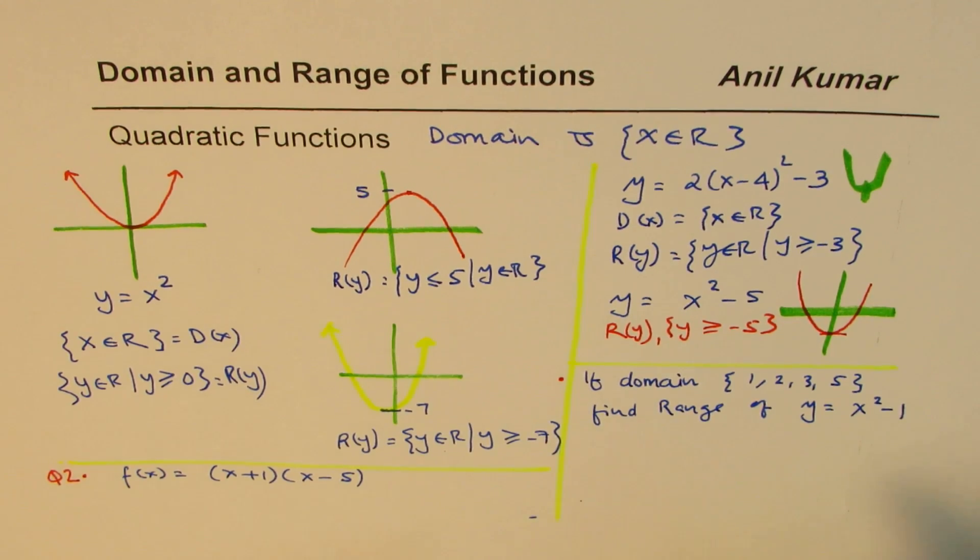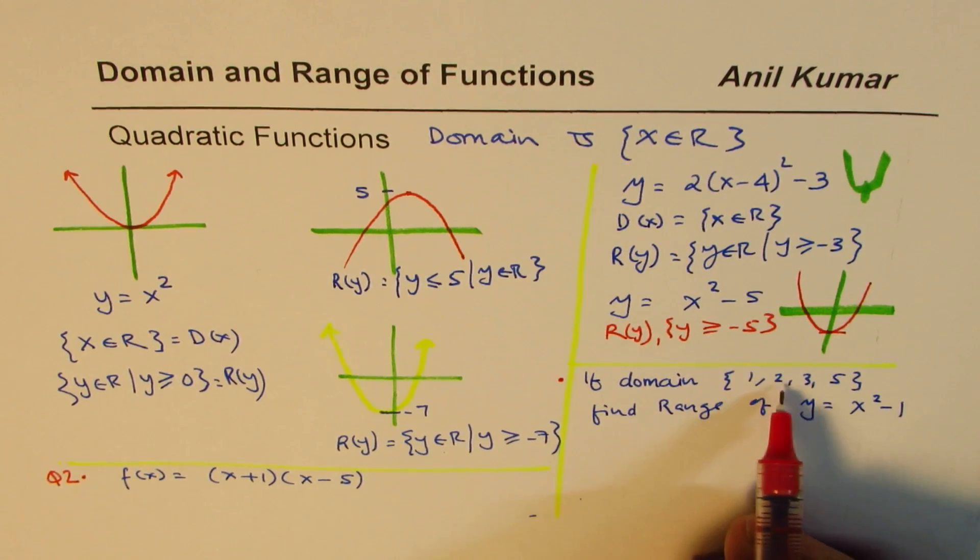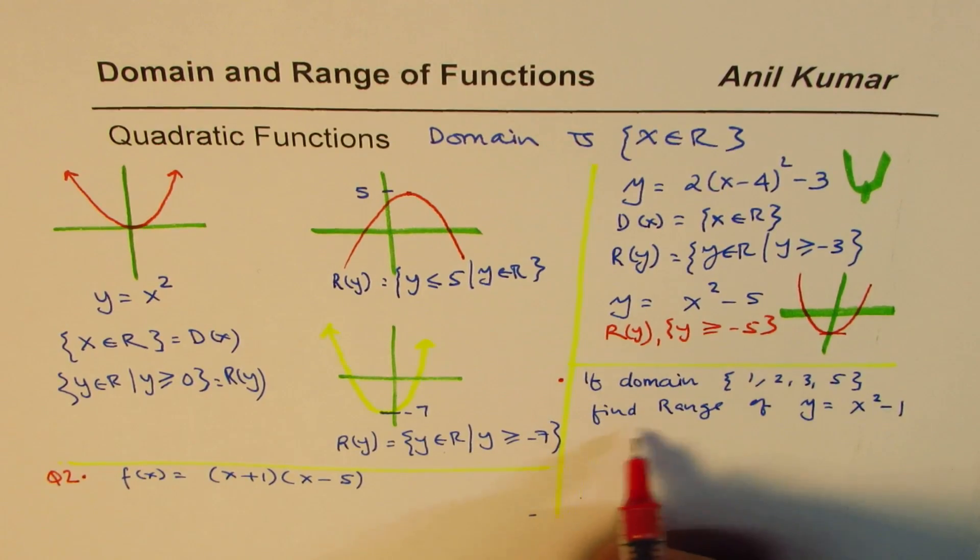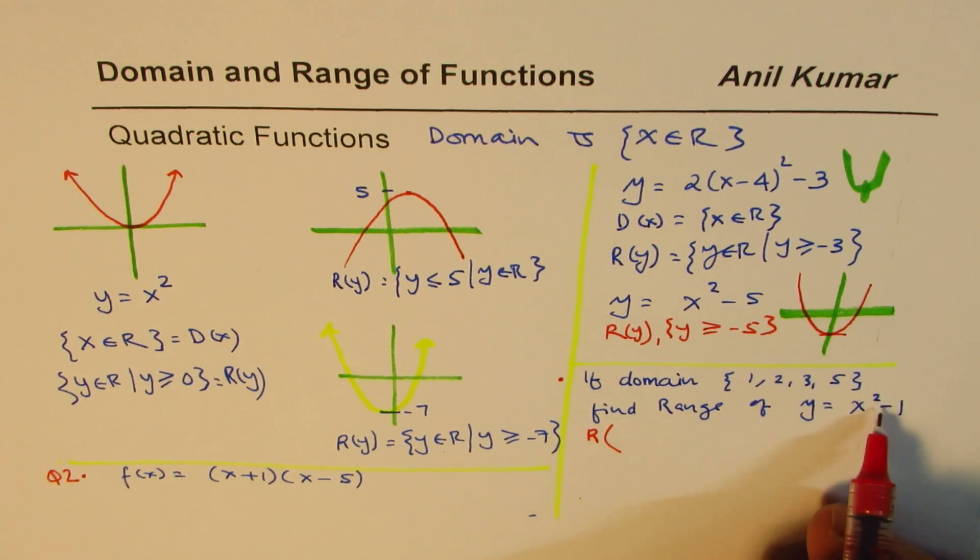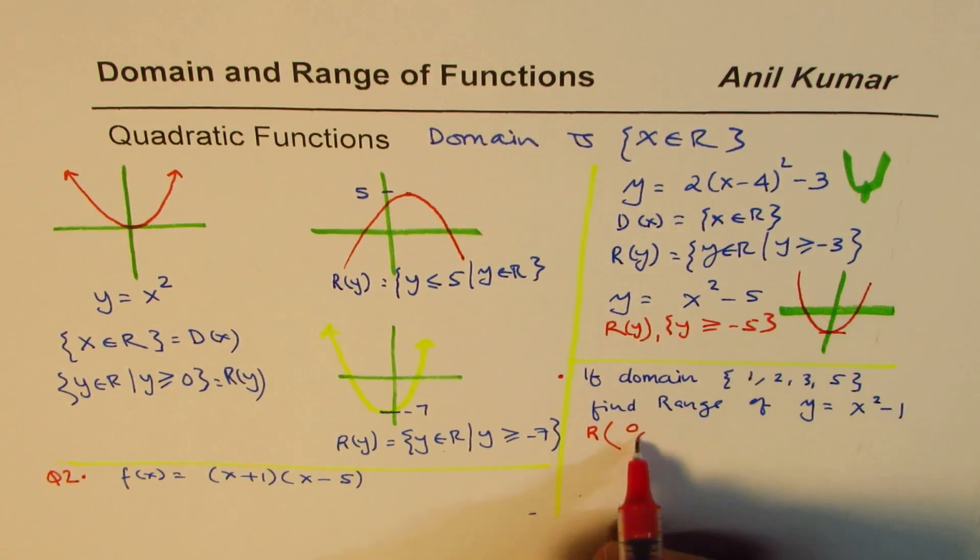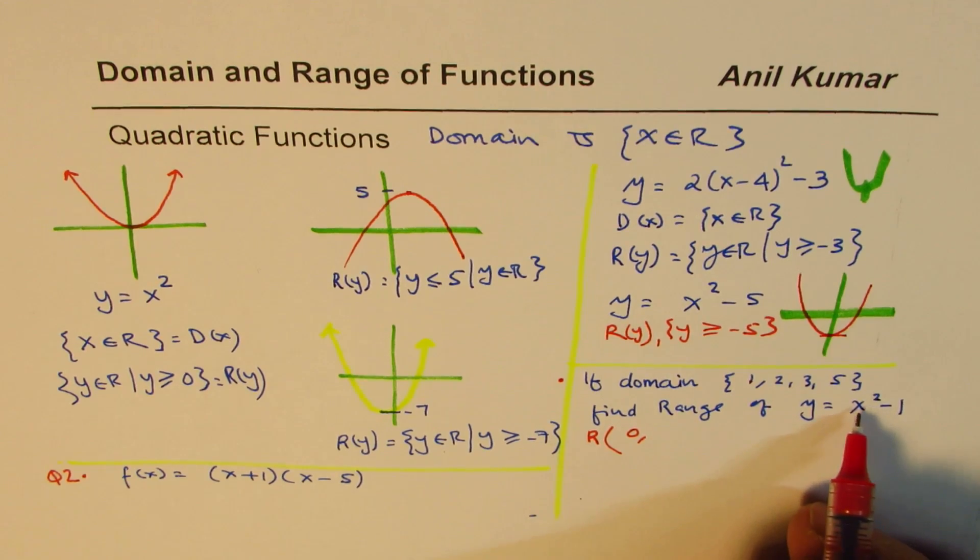Okay, here is the solution. Since we know domain is {1, 2, 3, and 5}, range will be what? Range will be, we have to substitute 1 here. If I substitute 1, I get 1 squared minus 1, which is 0. Then I substitute 2, 2 squared is 4, 4 minus 1 is 3.